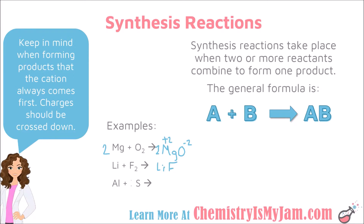They're going to come together to form lithium fluoride. And anytime we make a compound, we want to check the charges. Lithium has a charge of plus 1 and fluoride has a charge of minus 1. When you cross those down, you don't need any additional subscripts. However, we do need to balance, so I'm going to put a 2 here to balance out the fluorines and then I need a 2 here to balance out the lithiums.